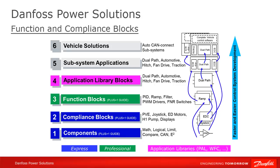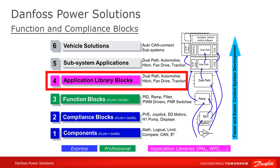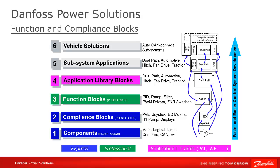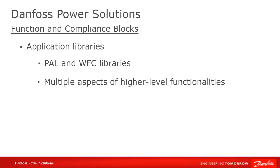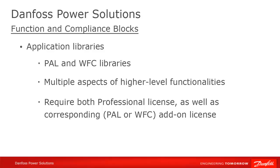Let's look quickly at the next two steps on the ladder before we focus on compliance and function blocks. The next level of sophistication in the PLUS1 software hierarchy is the Application Libraries — the Propel Application Library and the Work Function Control Library. These libraries handle multiple aspects of higher-level functions and have a collection of different related functionalities, like pump torque, anti-stall, or engine over-speeding calculation. Use of these application blocks requires both the professional license as well as an additional license for the application library being used, either PAL or the Work Function Control Library.